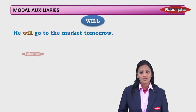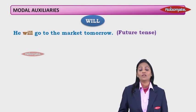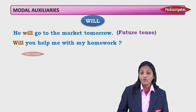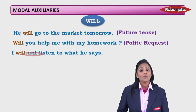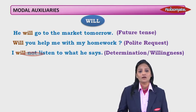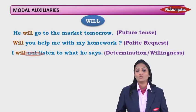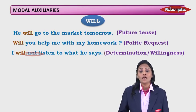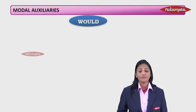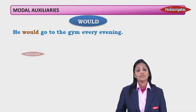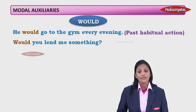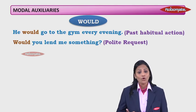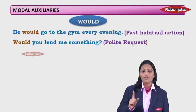'Will': 'He will go to the market tomorrow' — simple future tense. 'Will you help me with my homework?' — polite request. 'I will not listen to what he says' — determination or willingness, because normally with 'I' we use 'shall' for future, so 'will' shows something extra. 'Would': 'He would go to the gym every evening' — past habitual action. 'Would you lend me something?' — polite request. So could, would, and will can all express polite request.